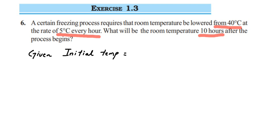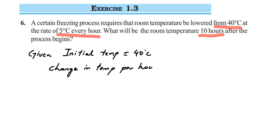Initial temperature is 40 degrees Celsius. Since they are decreasing the temperature, the sign will be minus. If it is increasing, we put a plus sign. Since they are decreasing here — that is, the change in temperature is lowering — we are going to put a minus sign, so it will be minus 5 degrees Celsius.